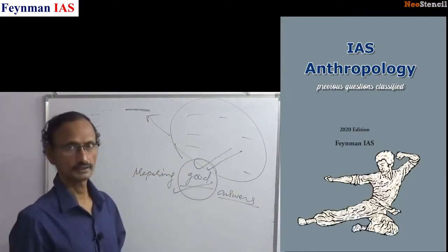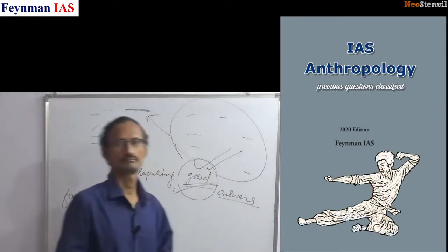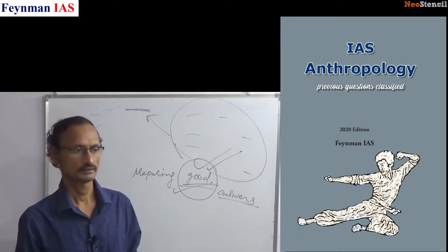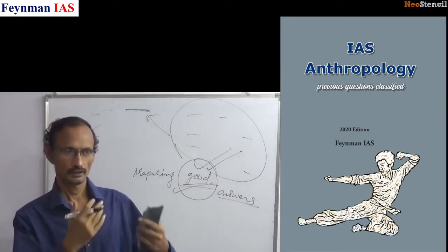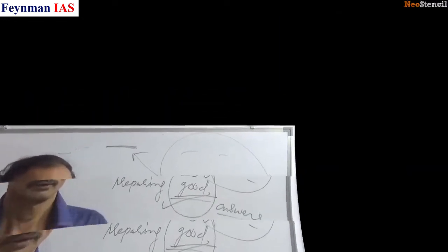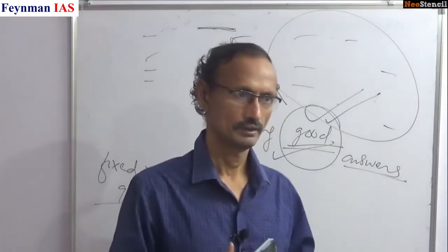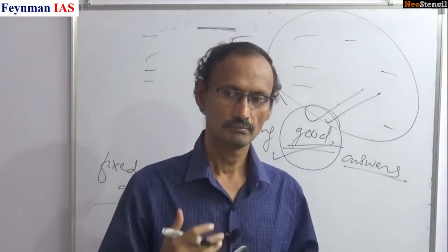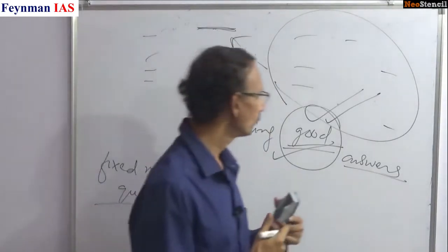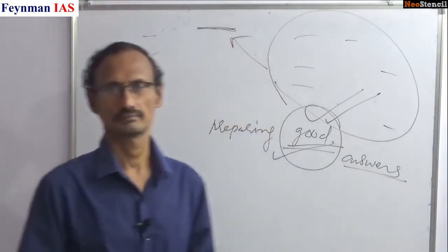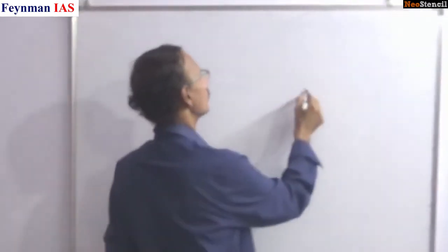This approach helps in many optionals, but in anthropology it is more so. Because in some optionals, something will be mentioned in the syllabus but what question can come is difficult to predict. But anthropology is not like that. There is a wording of the syllabus and there is a question corresponding to it. And this is repeated. So, it is amenable to listing a fixed number of questions and preparing good answers. Next step is what makes a good answer.